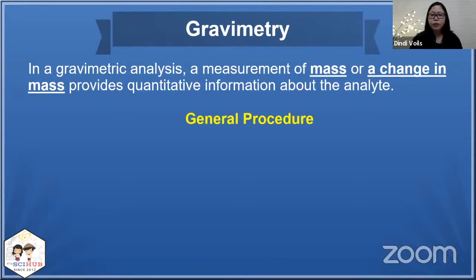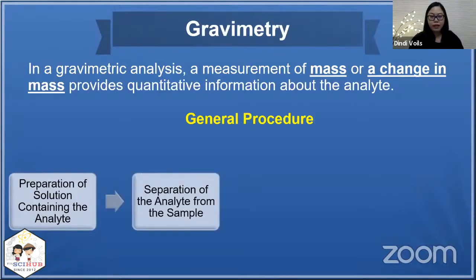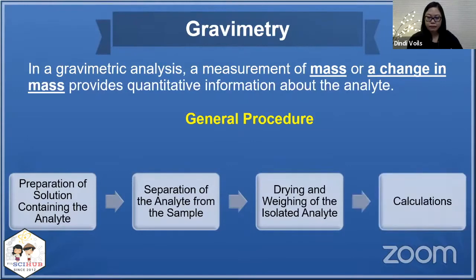The general procedure looks something like this. First, you prepare the solution containing the analyte, then you separate the analyte from the sample, then you dry and weigh the isolated analyte, and finally from the mass of the analyte you perform your calculations.